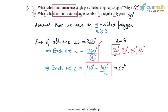Again we have arrived at the same answer, but this time we have proven it more rigorously: the maximum possible exterior angle is 120 degrees and hence the minimum possible interior angle is 60 degrees. This completes question number 6.